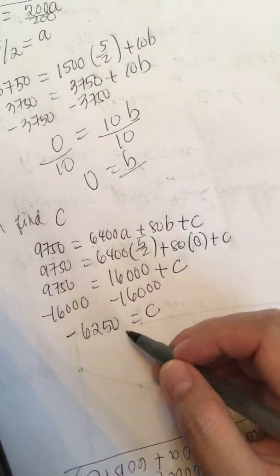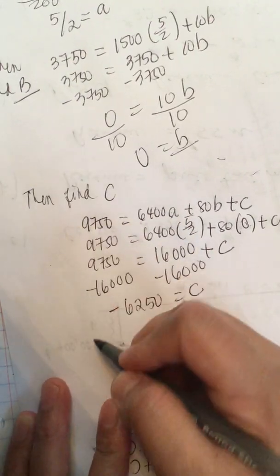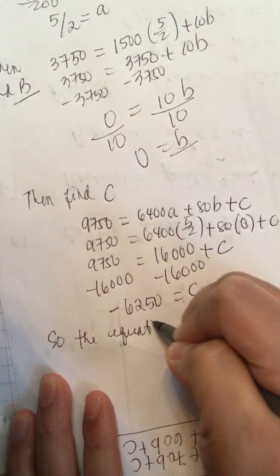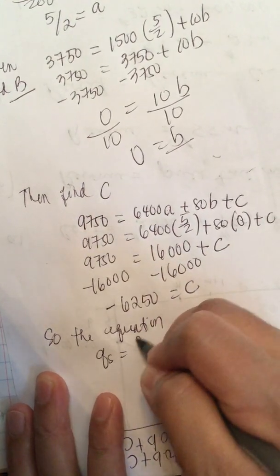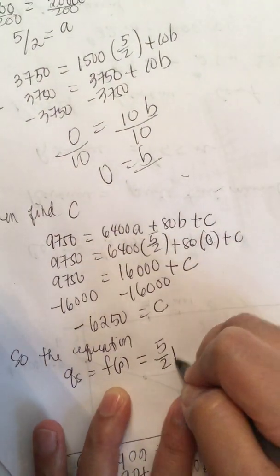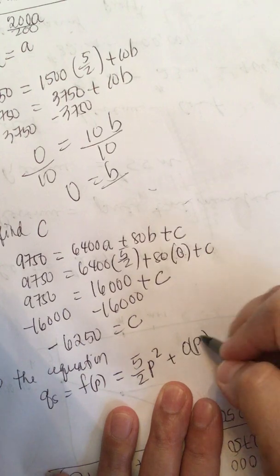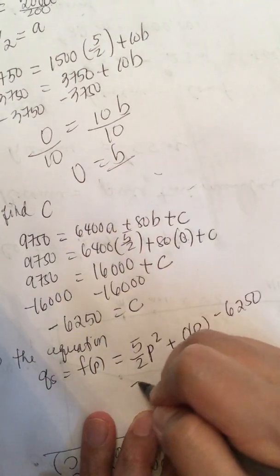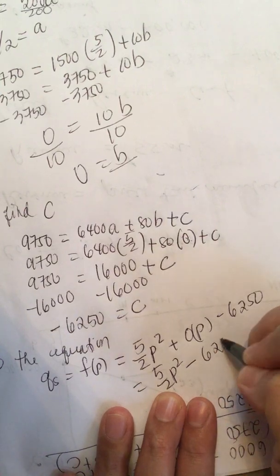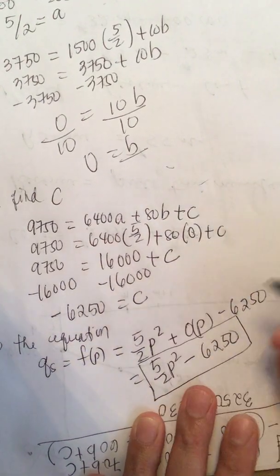We find c equals negative 6250. So we can now write the formula: Qs equals f of p equals (5/2)p squared plus 0p minus 6250, which simplifies to f of p equals (5/2)p squared minus 6250. This is the answer for part A.